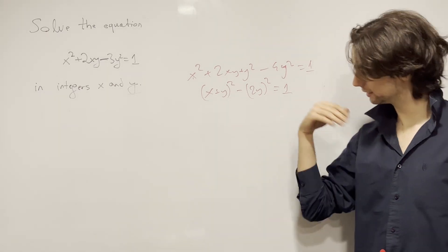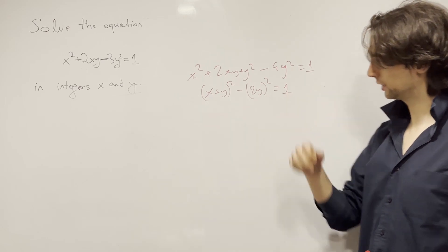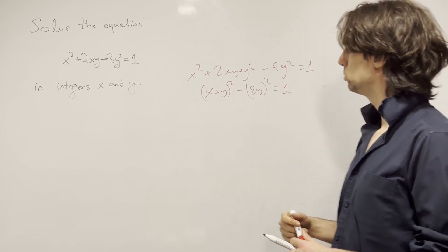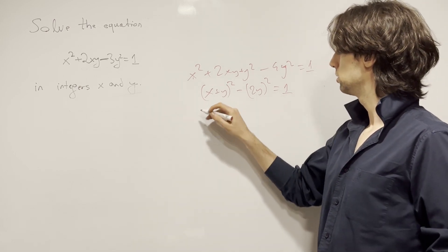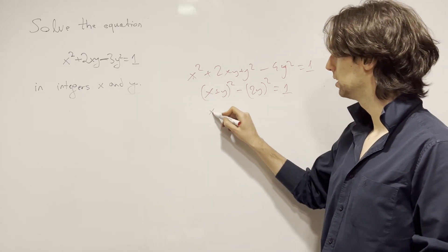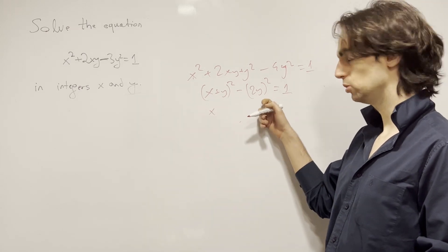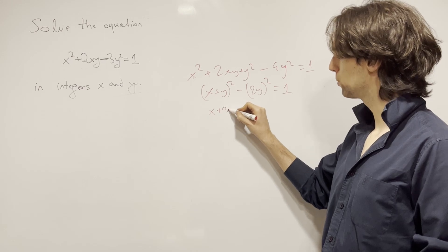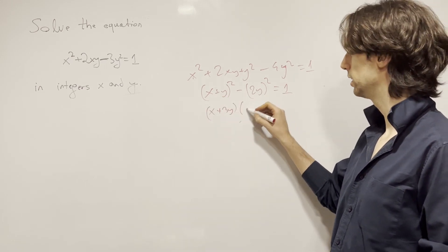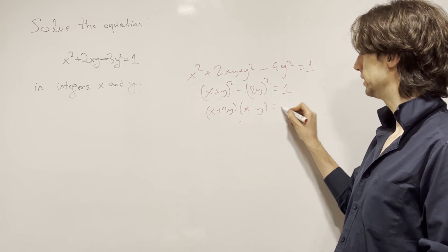I invite you to pause for 3 minutes and answer that. Now the answer is, well, there's a lot of things we could do, but the quickest thing for us to do here is just write this as a difference of squares. And now we have (x + 3y)(x - y) = 1.